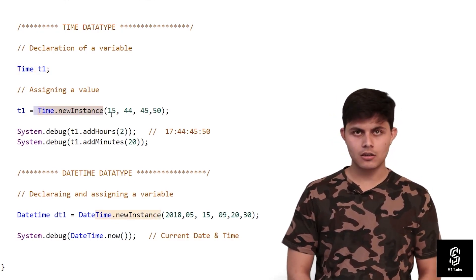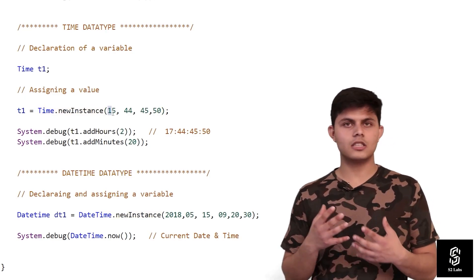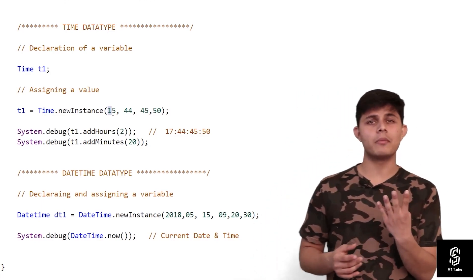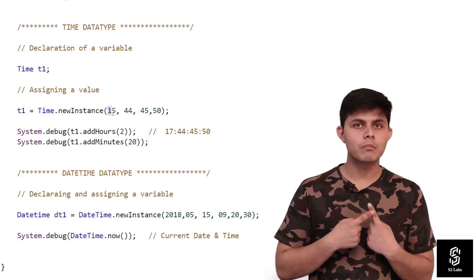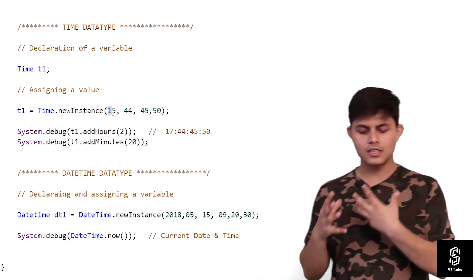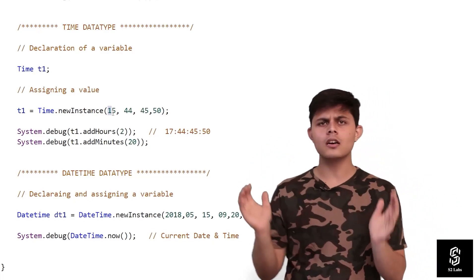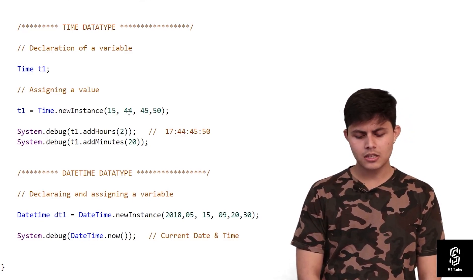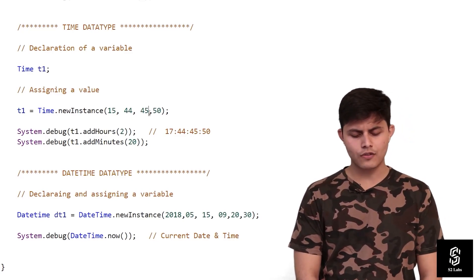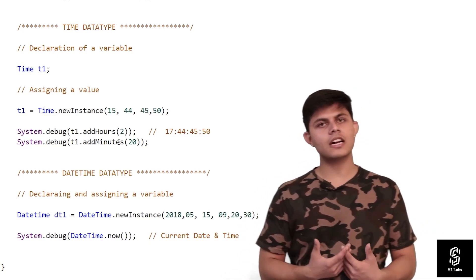The Time.newInstance() method takes four parameters: first hours, second minutes, third seconds, and fourth milliseconds. We can assign this value to the variable using Time.newInstance() with arguments. In this example, we're assigning 15 hours, 44 minutes, 45 seconds, and 50 milliseconds.